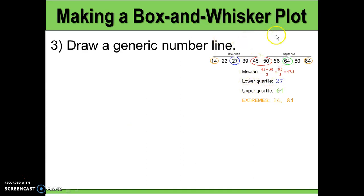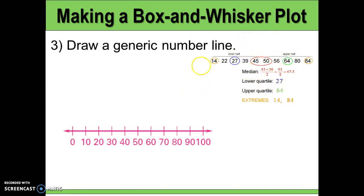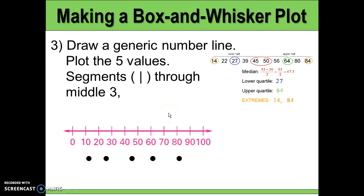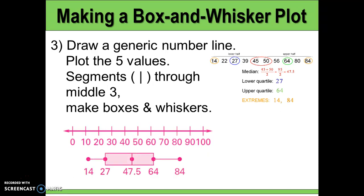Once we have these five numbers, we draw a number line — in this case from 0 to 100, counting by 10. We plot those five points, doing a little approximating: 47.5 is about halfway between 40 and 50, and 27 is a bit more than halfway between 20 and 30. Then we draw vertical segments through the middle three numbers, connect them into a rectangle for the box, and draw whiskers from the quartiles out to the extremes.